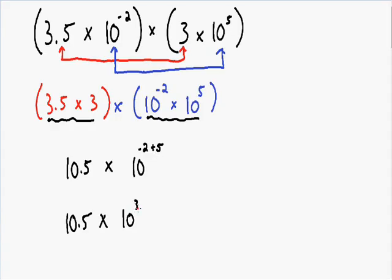So now we have a result of 10.5 times 10 to the third, which is not okay. Our final answer can never have a constant that is greater than 10, and notice how our constant is 10.5, which is greater than 10. So what we need to do is make this constant less than 10. We need to move the decimal point over one space so it becomes 1.05.